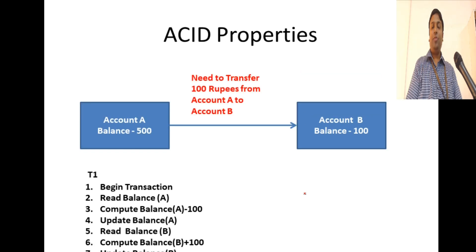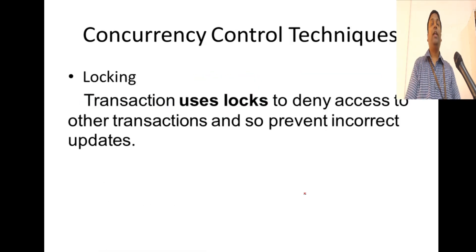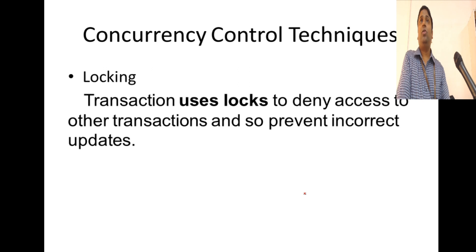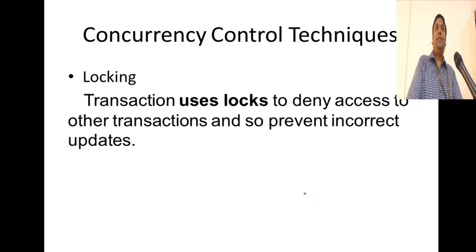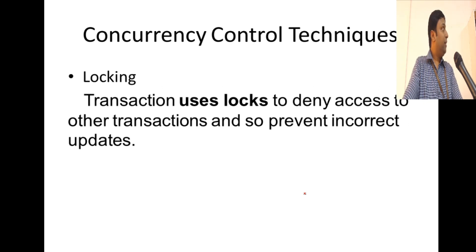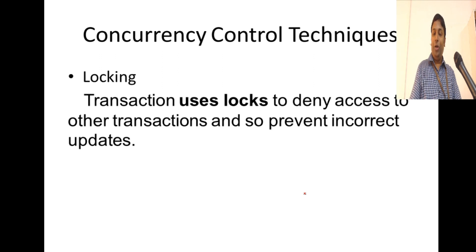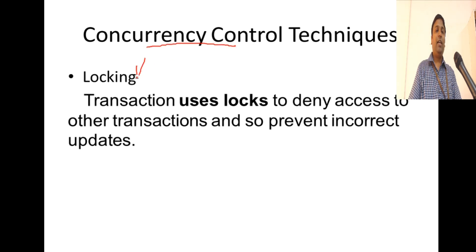We have seen all the problems with respect to concurrent execution of transactions. What are those three problems? Lost update, temporary update, and incorrect summary. When you want to run transactions concurrently in a commercial database, you are going to use some techniques. Those techniques are called concurrency control techniques, and in commercial databases, they use locking protocols.